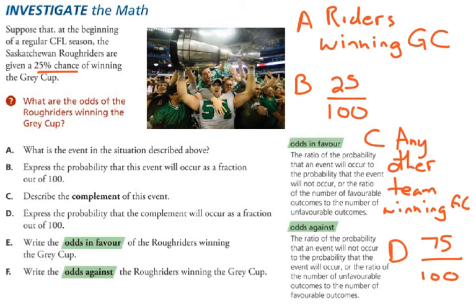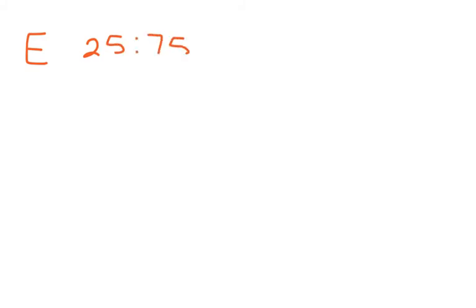Part E is the odds in favour of the Riders winning. In odds, as I said before, we don't deal with the 100 total events — we deal with the favorable and unfavorable. Favorable would be the Riders winning, which would be 25. Unfavorable, we have 75 times where they don't. Odds are not written as a fraction; they are written as a ratio: 25 to 75. Part F is the odds against the Riders winning the Grey Cup. That would be the complement — how many times do they not win the Grey Cup — which would be 75 to 25.